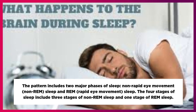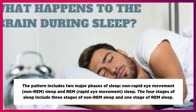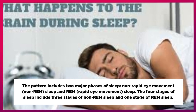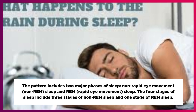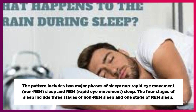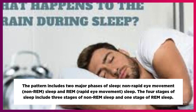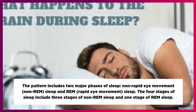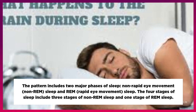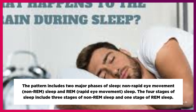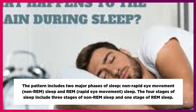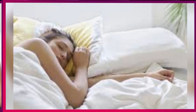The pattern includes two major phases of sleep: non-rapid eye movement (non-REM) sleep and REM (rapid eye movement) sleep. The four stages of sleep include three stages of non-REM sleep and one stage of REM sleep.